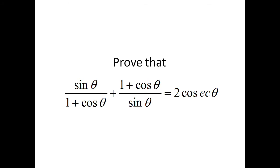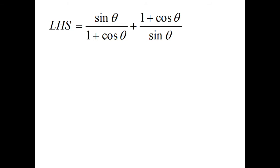For proving this, we start from the left hand side. The method chosen here is making the same denominator by multiplying by the denominators of the fractions alternately. In the first fraction the denominator is 1 plus cos theta, so we multiply the numerator and denominator of the second fraction by it. In the second fraction the denominator is sine theta, so we multiply the numerator and denominator of the first fraction by it. This gives both fractions the same denominator, making it easy to process.